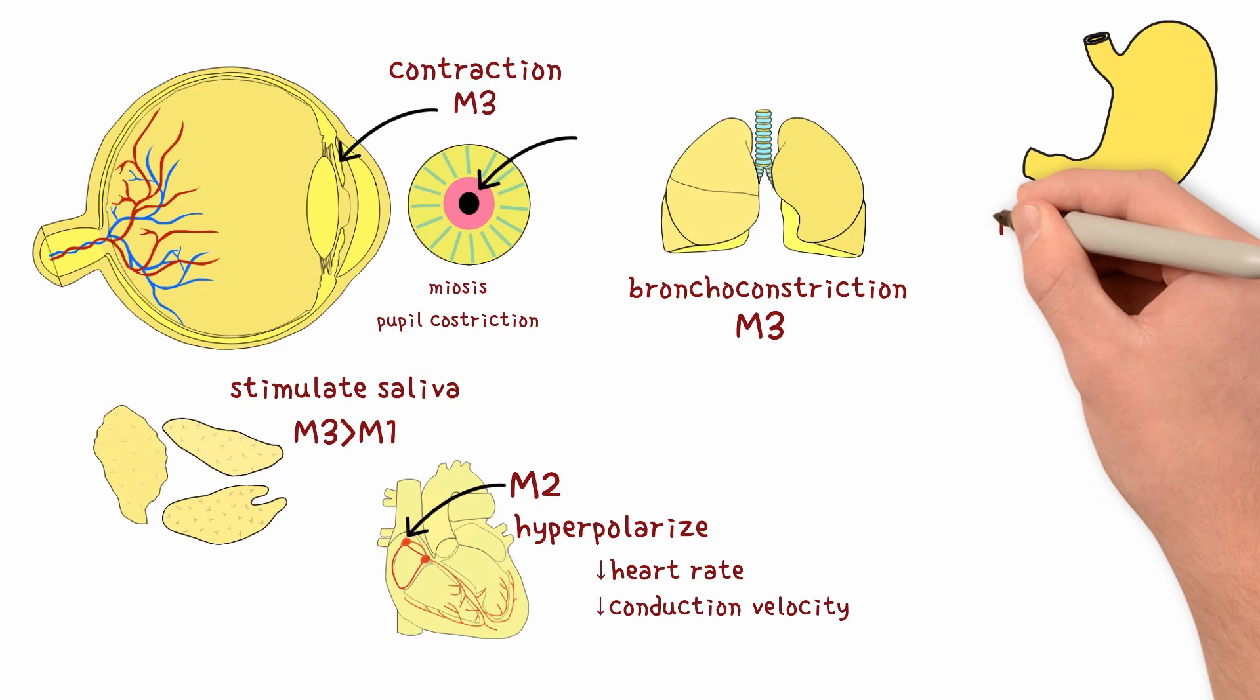The GI tract. M3 activation stimulates peristalsis to aid digestion and relaxes sphincters to allow food to pass. It also ramps up gastric acid and bile secretion.